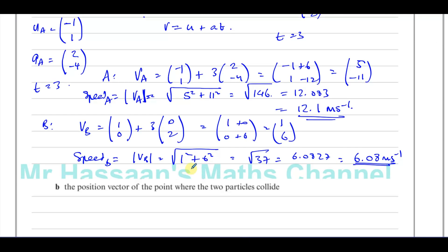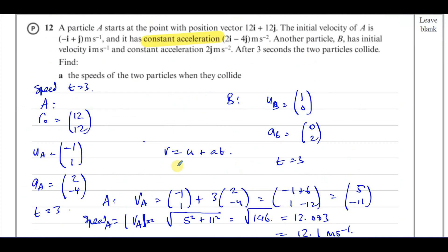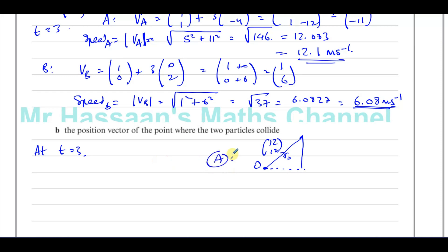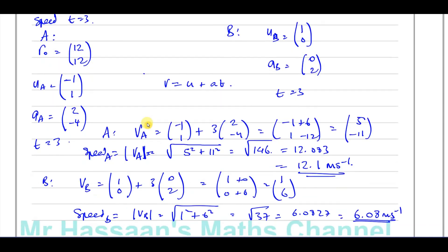Part B asks us to find the position vector of the point where the two particles collide. We know they collide at t = 3 seconds. I know more information about particle A, so I'll use A to work out where A is when they collide — and that will be the same place where B is. Particle A starts at position vector (12, 12) from the origin.